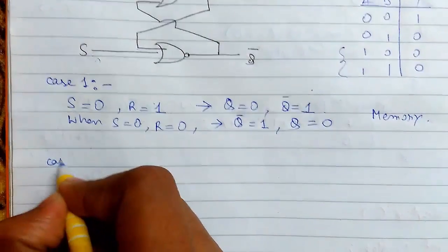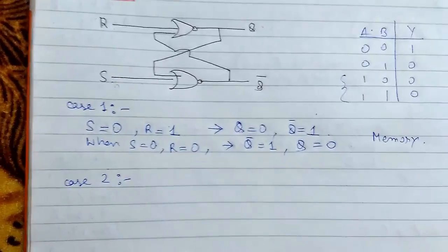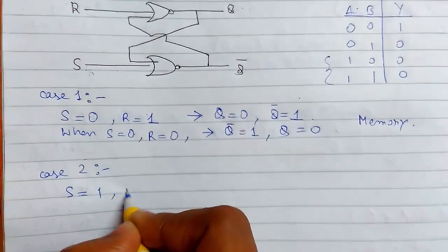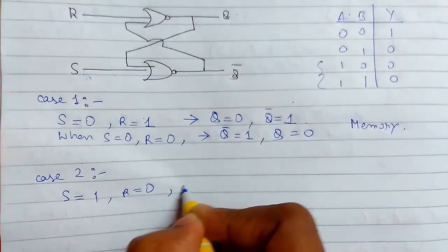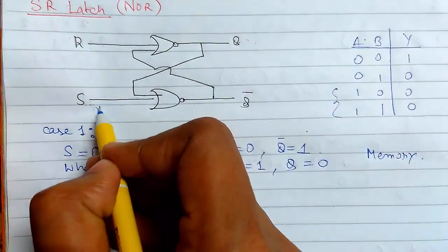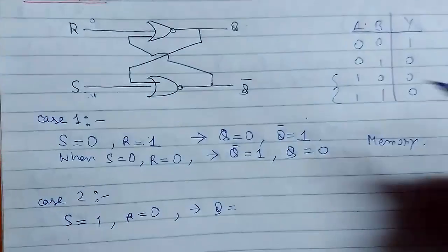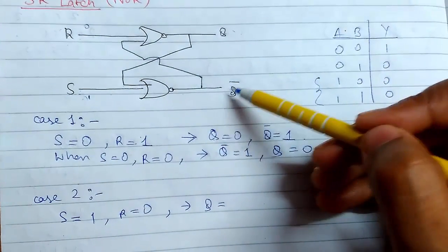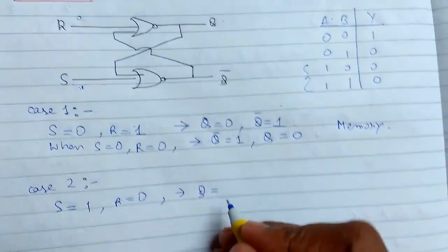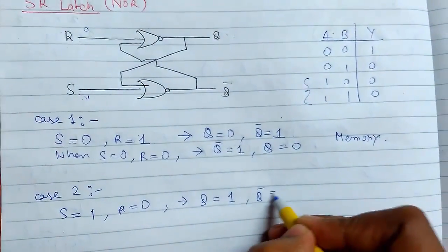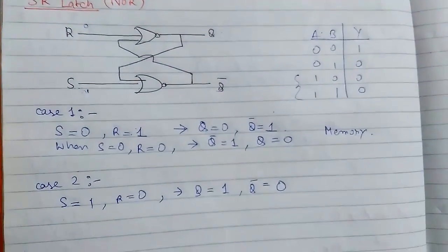Now case 2, when S equals to 1 and R equals to 0. So let us see what will be our output. S is 1, R is 0, so 1, so this gets deactivated, so it will be 0, 0, 0 is 1. And Q bar, 1 will pass here. So here we see that Q bar is 0, so this is our output.